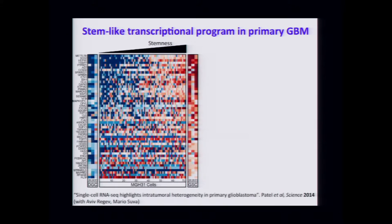Looking at about 70 different cells from one patient's tumor, there is a population of cells that are highly expressing many of the genes in this stem-like signature. Together with the protein-level analysis showing core TFs present, we have stem-like cells in tumors that emulate our model. We also identified cells with a transcriptional signature that looks like what our model looks like.